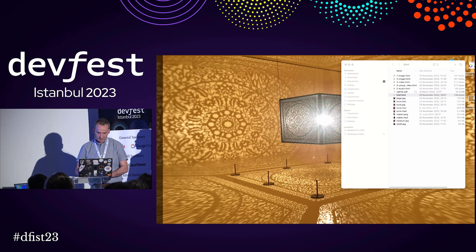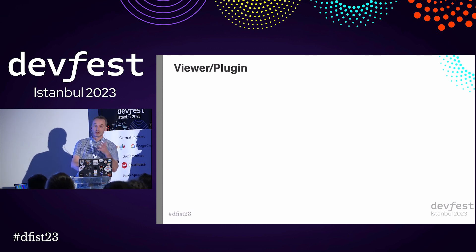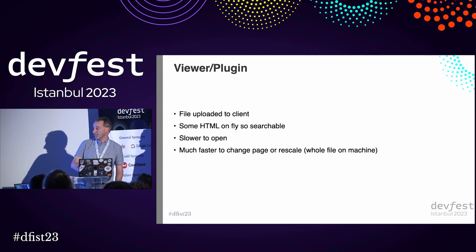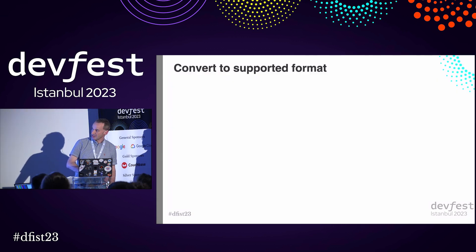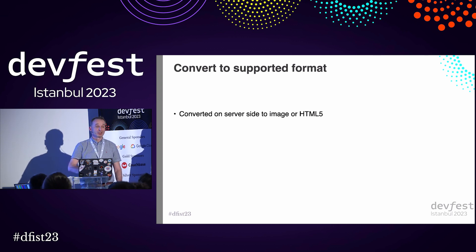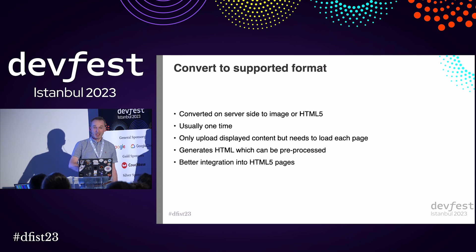Option one is to use the system defaults and just accept what it gives you — which isn't a great experience for most users, and you can't guarantee what they're going to see. Your other options: you can use a viewer plugin. You may be familiar with PDF.js, which is what Chrome uses — Chrome, Safari, and Firefox all have their own built-in PDF viewers. There are pros and cons: you have to upload the file, it's slower to open because the whole file goes on the device, but faster to change page or rescale. The other possibility is to convert it — what we and our customers do is convert PDFs on the server and send just HTML. You can pre-process it, it generates HTML, and gives better integration with HTML apps, but moving between pages quickly or scaling in will be slower due to a server round trip.